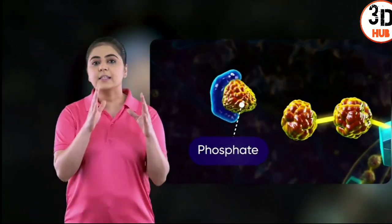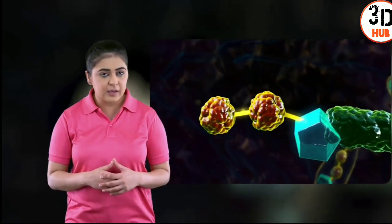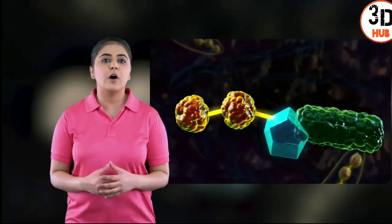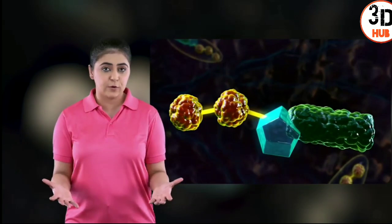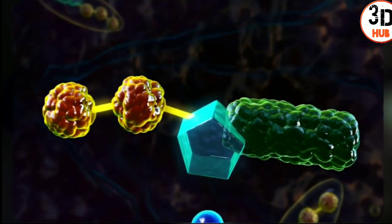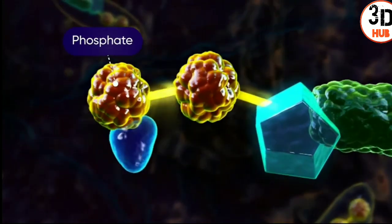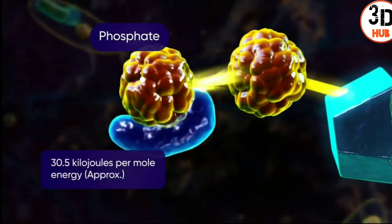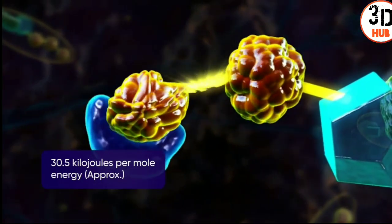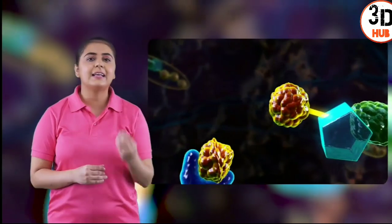The terminal phosphate group is released as inorganic phosphate from ATP, resulting in the formation of adenosine diphosphate (ADP). When another phosphate group is released from ADP, it liberates 30.5 kilojoules per mole of energy, and adenosine monophosphate (AMP) is left behind.